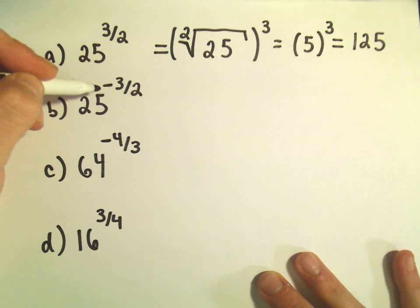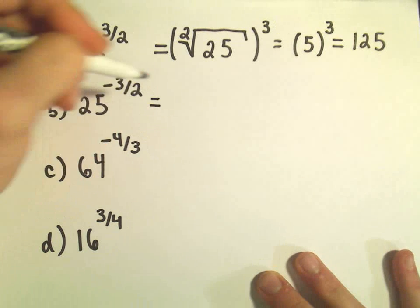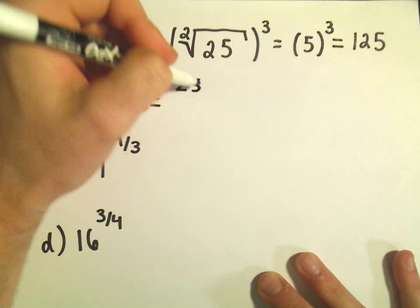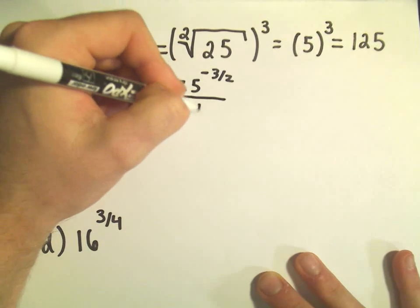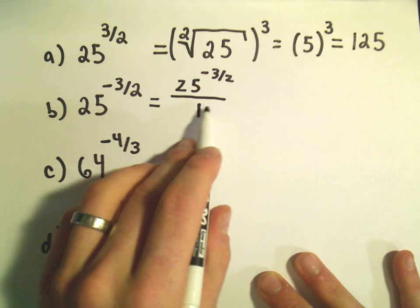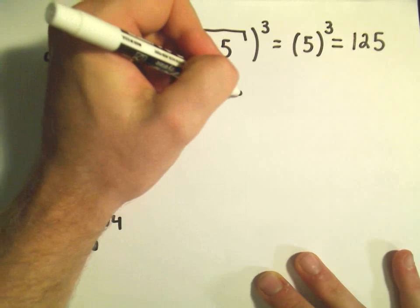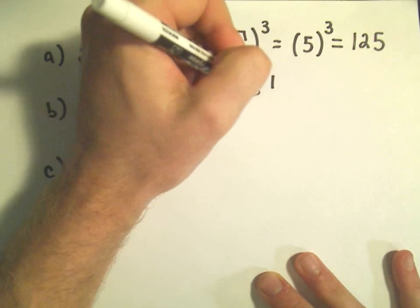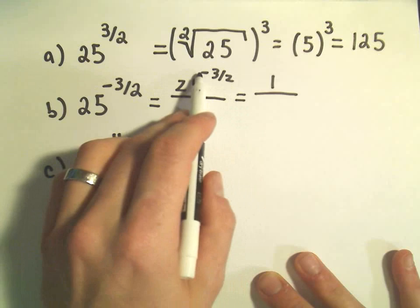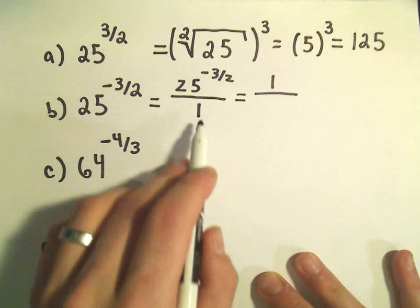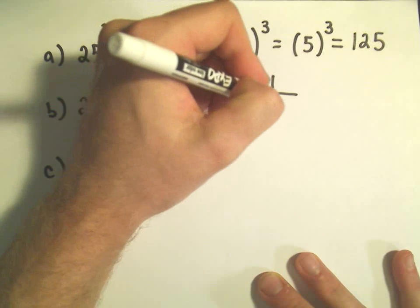Okay, so 25 to the negative 3 halves. Again, we could write that as 25 to the negative 3 halves divided by 1. You can write anything over 1, that doesn't change its value, and now we're going to use one of our algebraic properties that says if you have a negative exponent, to make it positive, you move it to the other side of the fraction.